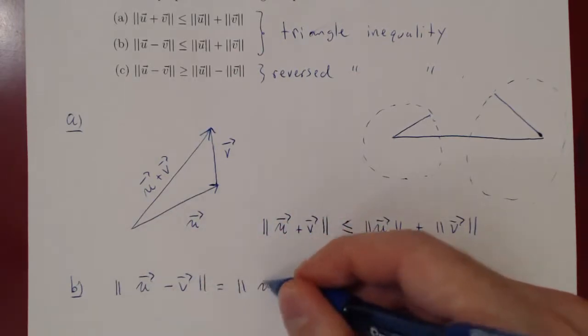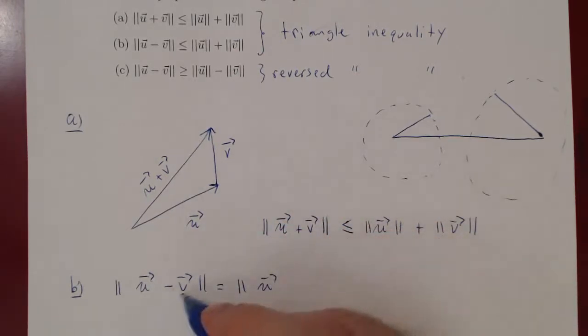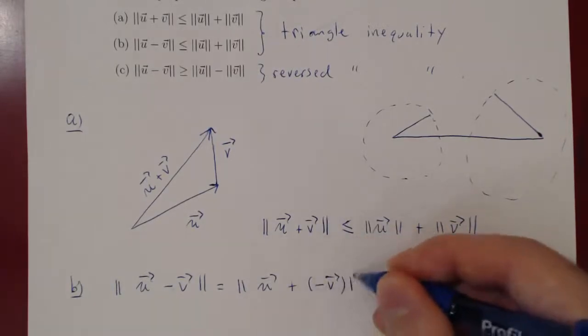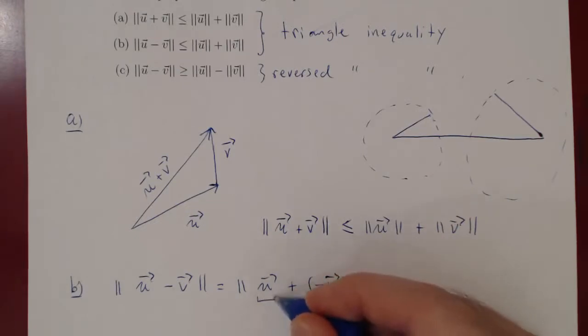And what's negative v? Well, it means that you add to u the negative of vector v. And now we can use a triangle inequality that we've proved in part a. The length of the sum of two vectors is at most the sum of the individual norms.